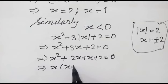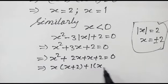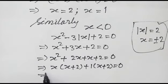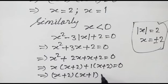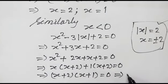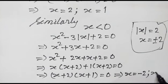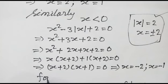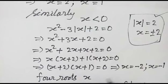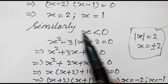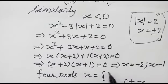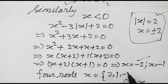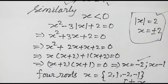Taking x common we get x times (x plus 2) plus 1 times (x plus 2) is equal to 0, so x plus 2 times x plus 1 is equal to 0. This gives us two more roots: x is equal to minus 2 and x is equal to minus 1. So the four roots are 1, 2, minus 1, and minus 2.